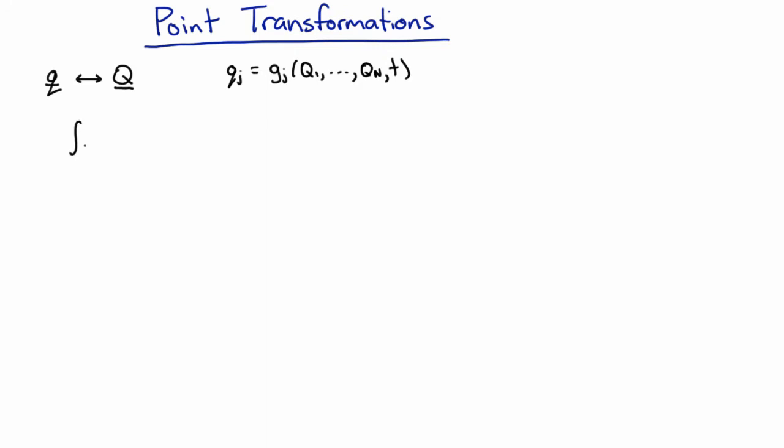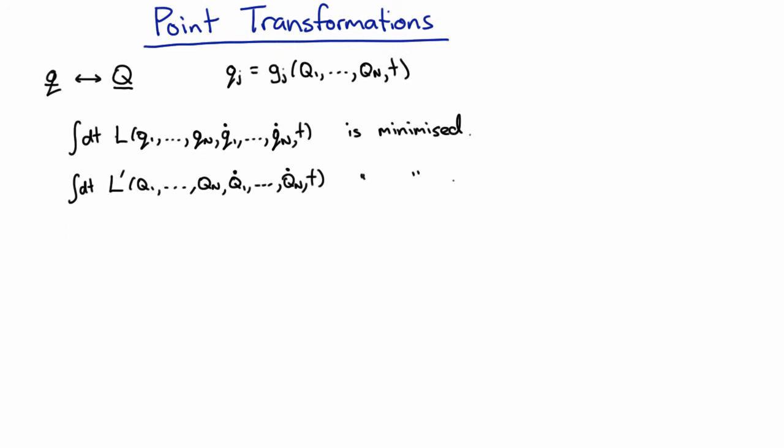Now Hamilton's principle tells us that the integral of the Lagrangian, which is a function either of all the little Qs or the big Qs, is minimized. This is also true for the big Q coordinates. Now this is L dash and not L,